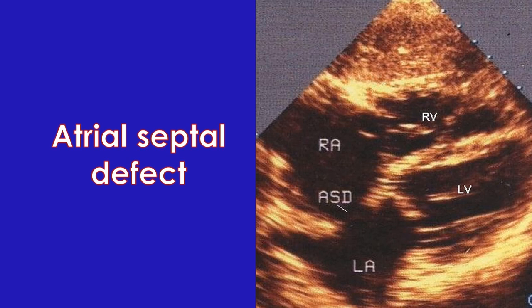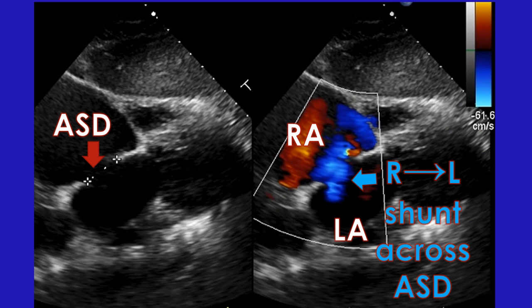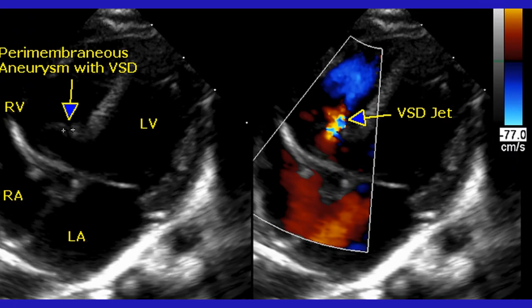Estimated right ventricular systolic pressure is mentioned as RVSP, calculated from the velocity of the tricuspid regurgitation jet by Doppler echocardiography. Indirect evidence regarding pulmonary hypertension will be obtained from the size of the pulmonary artery, movement pattern of the pulmonary valve, and hypertrophy or dilatation of the right-sided cardiac chambers. Locations of atrial septal defects are sinus venosus, secundum and primum, from the upper end of the septum downwards. Primum atrial septal defect is usually associated with regurgitation of atrioventricular valves. Ventricular septal defects may be located as outlet, perimembranous, muscular or inlet.